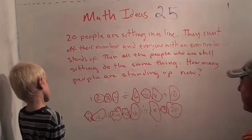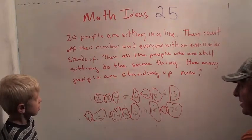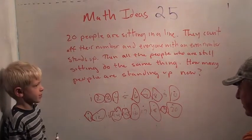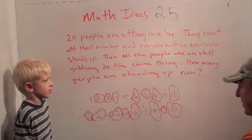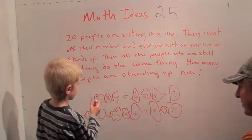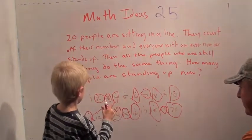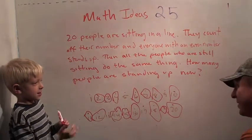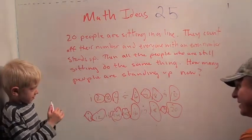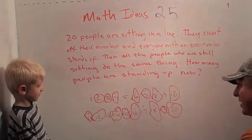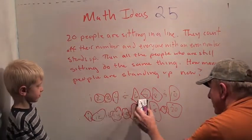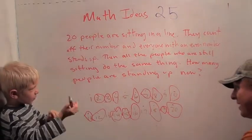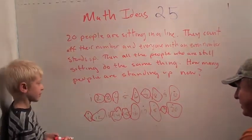So do you remember what the question was? What were we trying to answer? How many people are standing up? How many people are standing up now? What's the answer? Fifteen. How did you count that so fast? I counted by threes. You counted by threes? Yep. Three, six, nine, twelve, fifteen. Wow. Fifteen people are standing up. Can you believe that? Wowee.